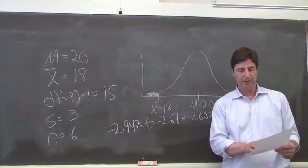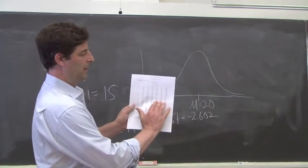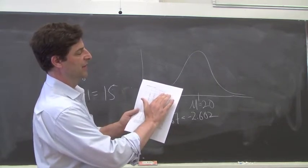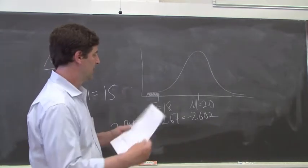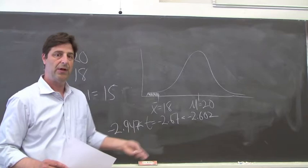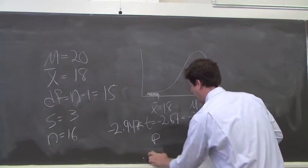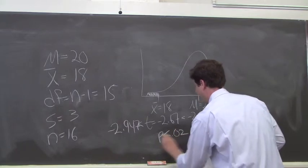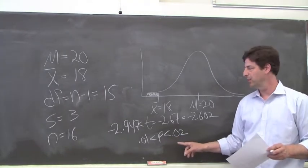Once we found those two t-values in Appendix B, we go up these two columns where it says alpha level for two-tailed tests, and we see we've got .02 and .01. This tells us that the probability of getting that t-value by chance is between .02 and .01.